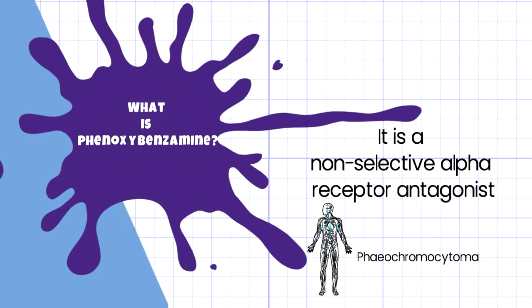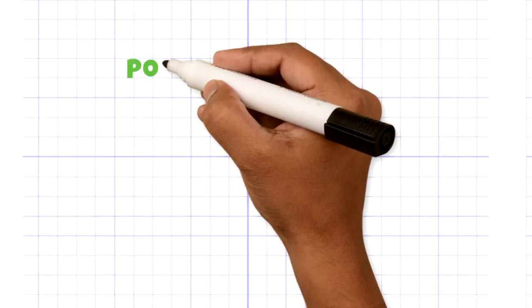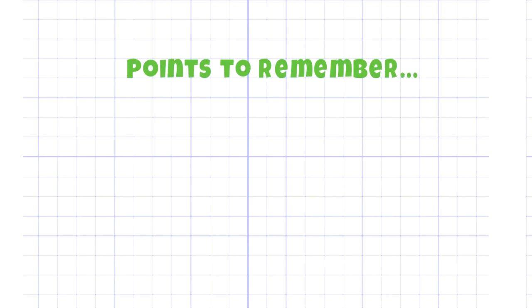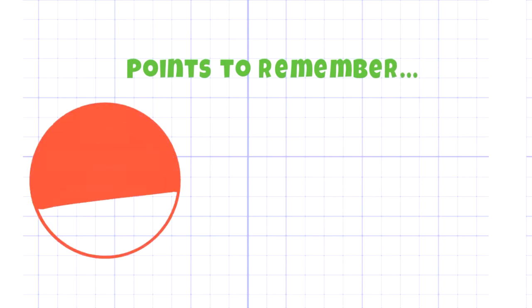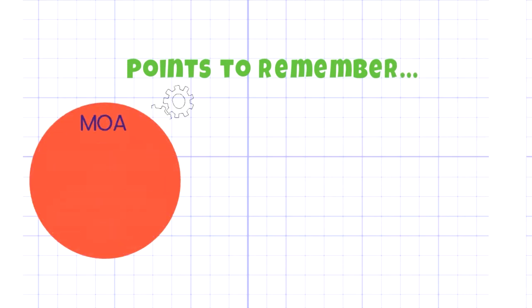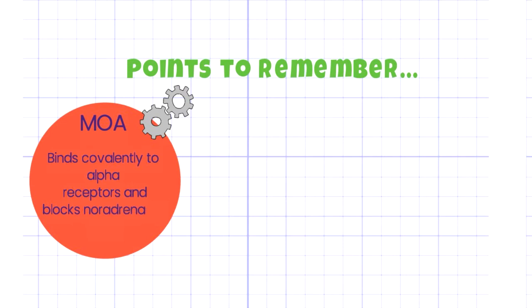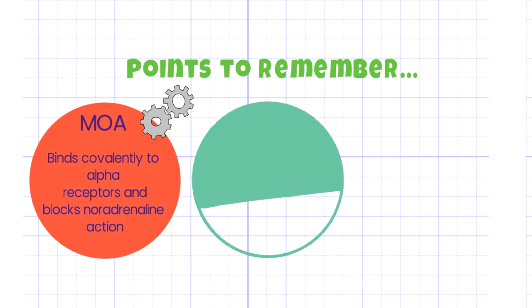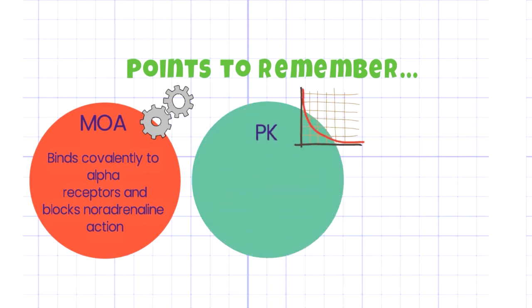Pheochromocytoma is a benign tumor of the adrenal gland. There are some points that you must memorize about phenoxybenzamine. First is its mechanism of action: phenoxybenzamine binds covalently to alpha receptors and blocks noradrenaline action.